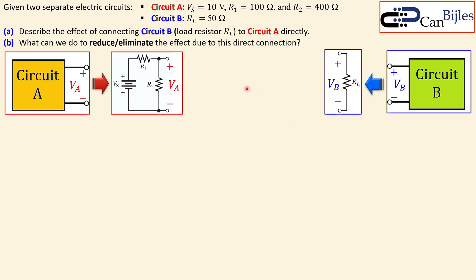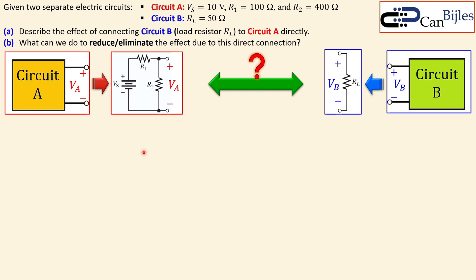What we would like to know and discuss is the following. First, describe the effect of connecting circuit B directly to circuit A. In the second case we will look at how we can reduce or eliminate this effect. Because circuit A before it was connected to circuit B produces some voltage, and that will change — we will see why that happens.